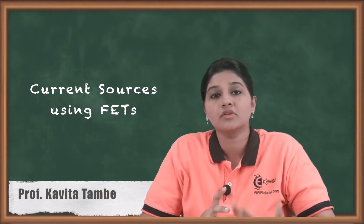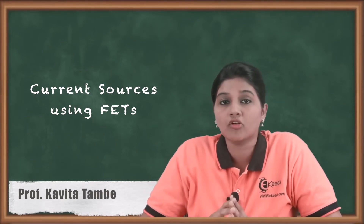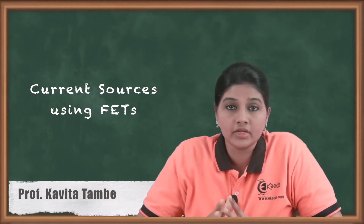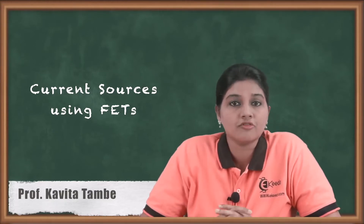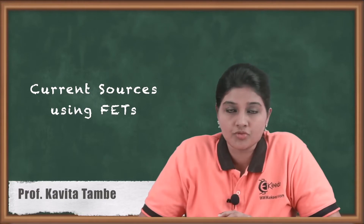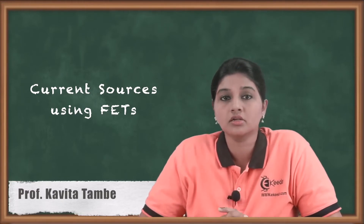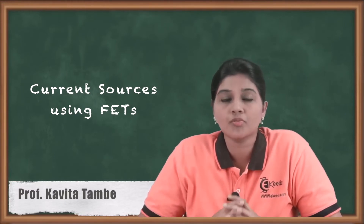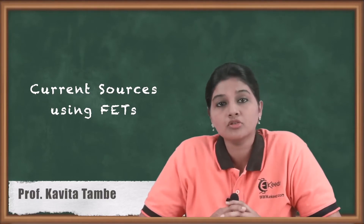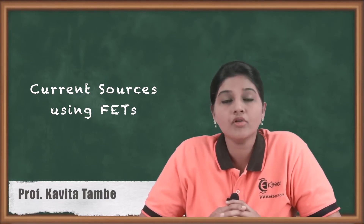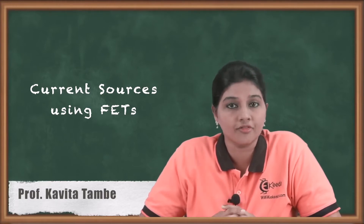We know that the various biasing techniques used for BJT cannot be used for integrated circuits because they require a large surface area for the fabrication process. Therefore, for integrated circuits, current sources are used for providing the biasing. In this topic, we are going to see how we can implement current sources using FET circuits.